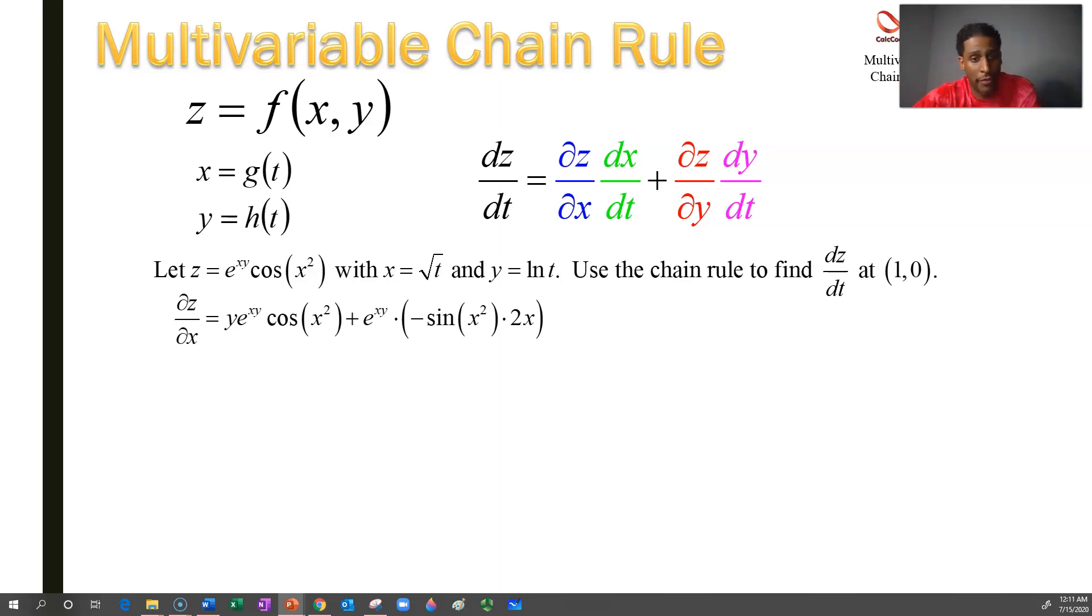Now, the y partial derivative is much easier because cosine of x squared is a constant. So we just focus on e to the xy's derivative with respect to y and get xe to the xy. You can't leave it like that though. It needs to be multiplied by that constant in terms of y. It is cosine of x squared. So this is half of the work. We have the partials with respect to x and y.